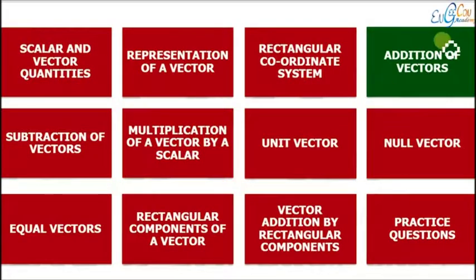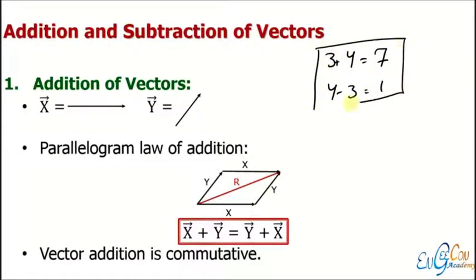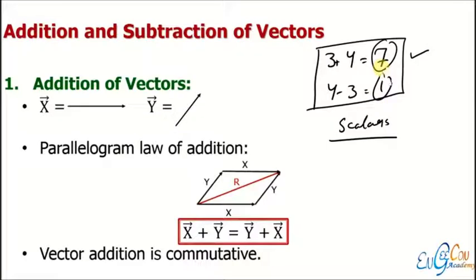Now a very important category: addition of vectors. Vectors can be added and subtracted but there are rules to understand. For ordinary numbers like 3 plus 4, we get 7, and 4 minus 3 gives 1 — only two possible answers. These are scalars. With only two numbers 4 and 3, there are only two possible answers: maximum 7 and minimum 1.